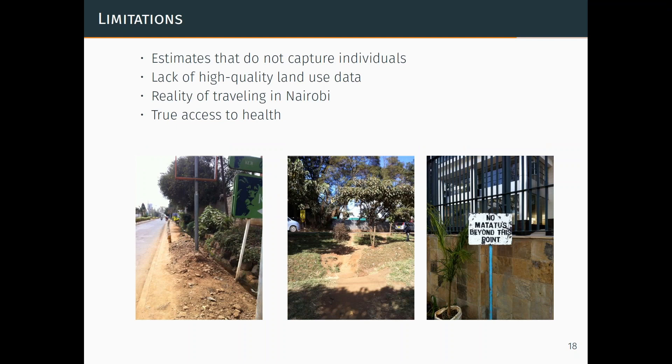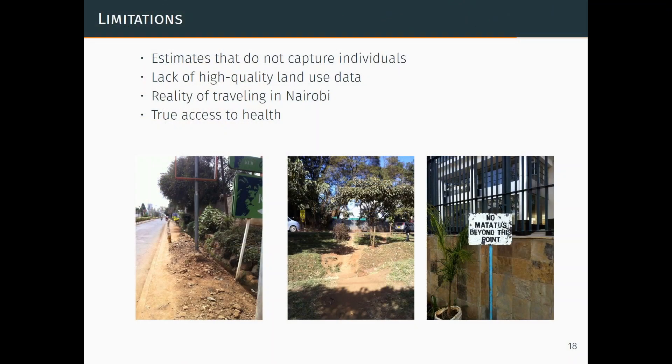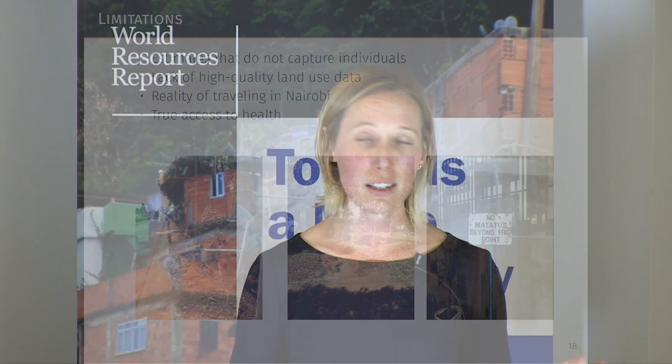Onto the limitations of this study. These estimates don't capture any constraints that individuals face — this is entirely just the physical transport system and location of buildings. Those limitations that individuals face are incredibly important: understanding more about financial constraints, tastes and preferences, physical disabilities, and cultural or gender differences that also inhibit access. But what we can say — just because of the relationship across modes, residences, and income levels — we can in this work talk about spatial inequality.